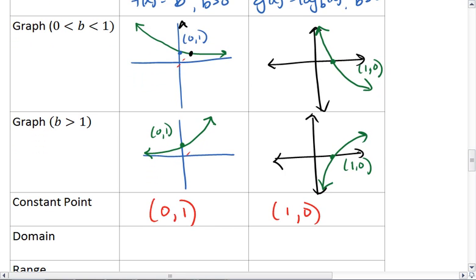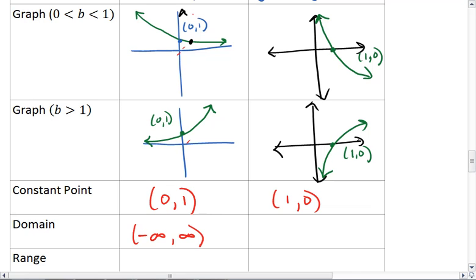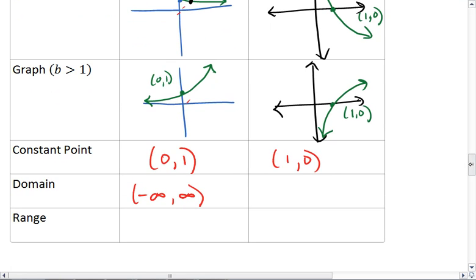Lastly, we look at domain and range. For exponentials, we can plug in any x value, so domain is negative infinity to infinity. But whatever we plug in for x, we only get positive values for our output. Thus, the range is 0 to infinity.